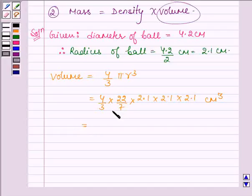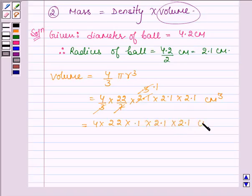This is further equal to 7 into 0.3 is 2.1 and 3 into 0.1 is 0.3. So we have 4 into 22 into 0.1 into 2.1 into 2.1 cm³.